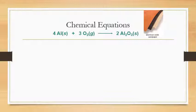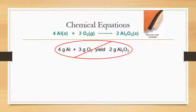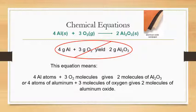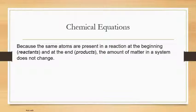Going back to the aluminium and oxygen equation: it's not saying four grams of aluminium reacting with three grams of oxygen to yield two grams of aluminium oxide. What it's actually saying is that four aluminium atoms plus three oxygen molecules give two molecules of aluminium oxide. The mass has nothing to do with the number in front of the formula.